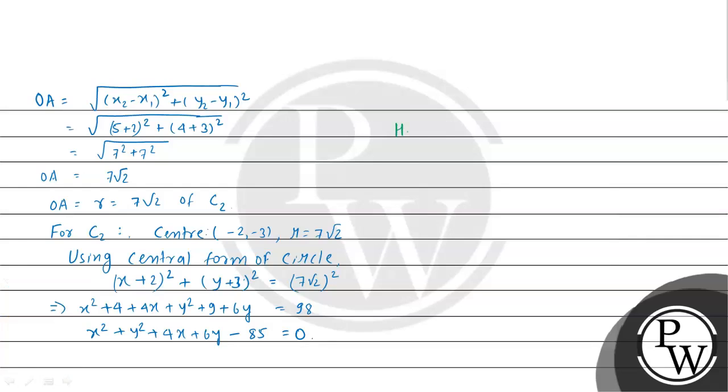Hence, the equation of the required circle is x² + y² + 4x + 6y - 85 = 0. And this is the final answer of the given question.